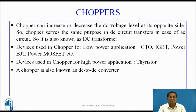Devices used in choppers for low power applications: GTO (gate turn-off thyristor), IGBT, Power BJT, and Power MOSFET. Devices used in choppers for high power applications: thyristor.